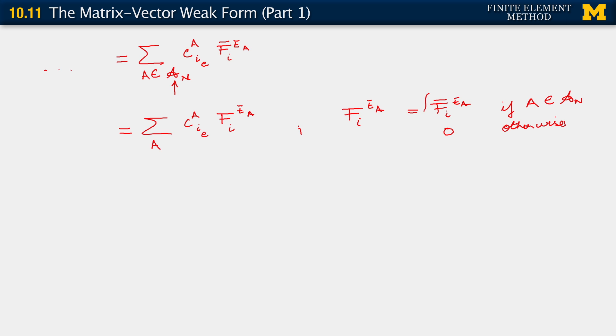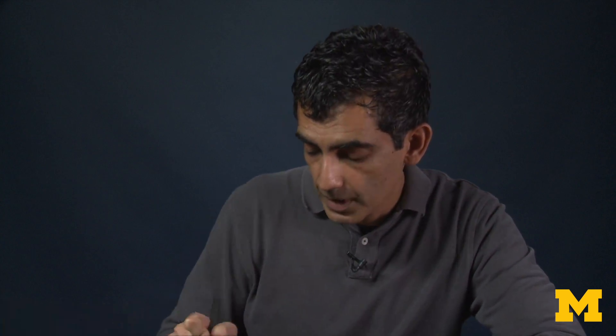And you will probably recall that this was the approach we used when we reconstructed the contribution from the Neumann boundary condition also for the scalar problem. So what have we here? We are now in a position to look at our total finite dimensional weak formula. We are now in a position with all these element integrals accounted for.